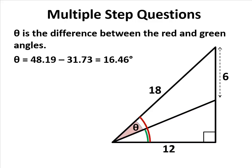That allows me to now solve for theta. I take the red angle, calculated at 48.19, the green angle, calculated at 31.73, subtract them and the difference is theta: 16.46.